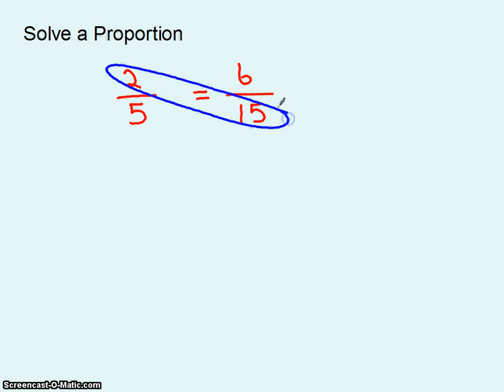Multiply those two numbers together. You get 30. Multiply those two numbers together. You get 30. Well that's interesting.